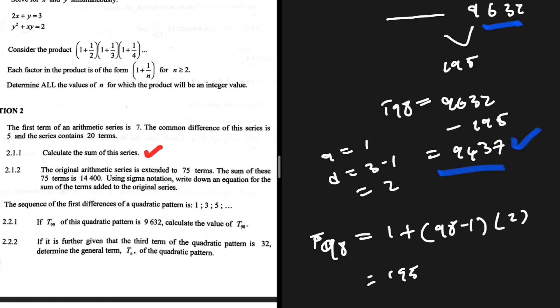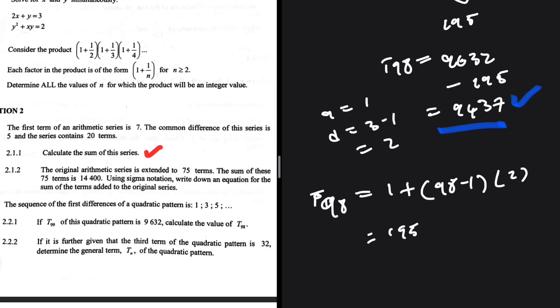Therefore t98 of the quadratic = 9632 − 195 = 9437. There is another way to find t98 — by finding tn first — but since 2.2.2 asks us to find tn, we handle that separately in the next part.